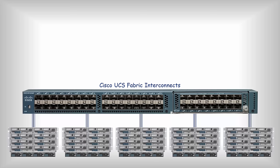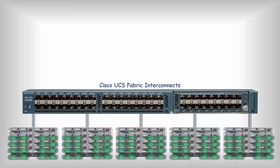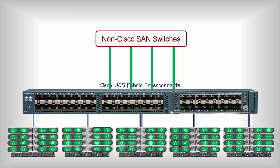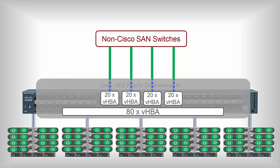This particular UCS fabric interconnect is managing five blade systems, each with eight blades. Each of these blades are running two VMs, resulting in a total of 80 VMs. All the VMs have dual vHBAs connected to two redundant SANs. In this example, I am showing only a single fabric interconnect for simplicity. This fabric interconnect has four SAN uplinks. The 80 vHBAs will get evenly pinned to the four SAN uplinks, resulting in 20 vHBAs pinned to each uplink.